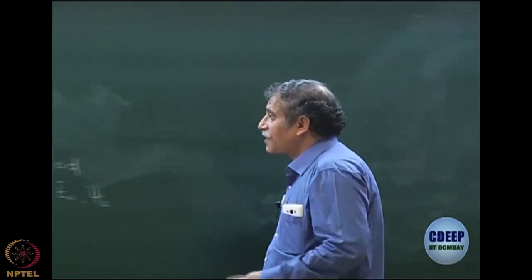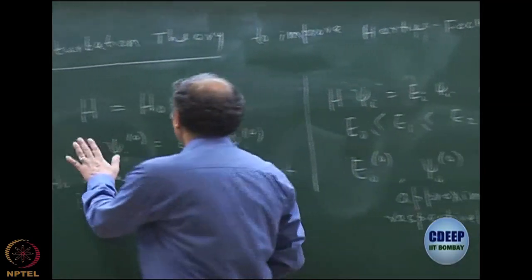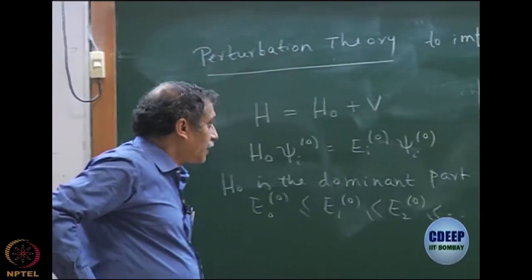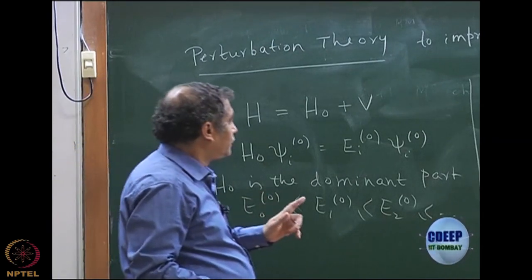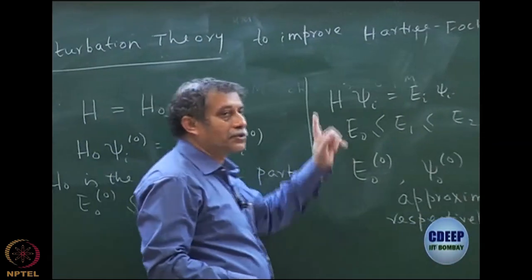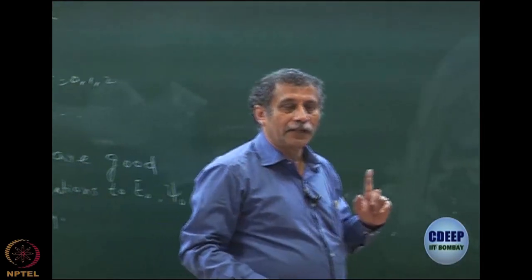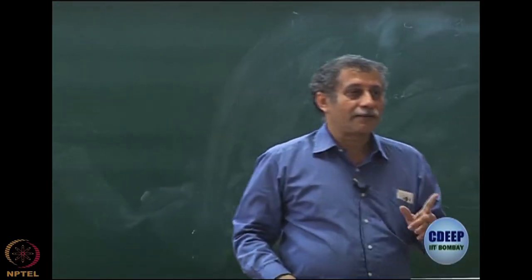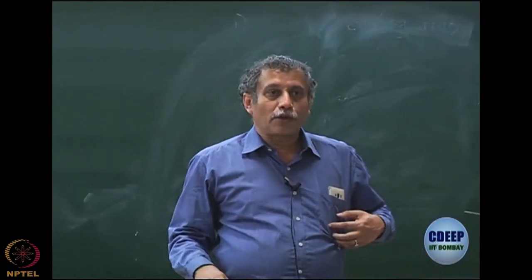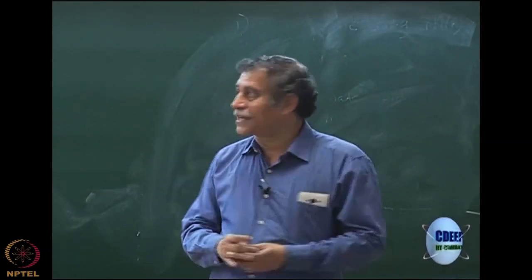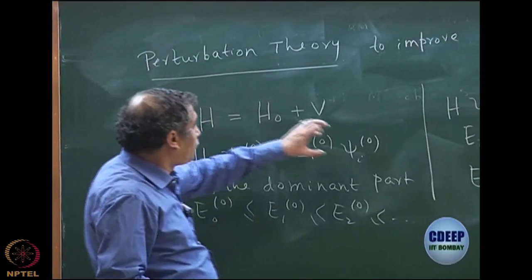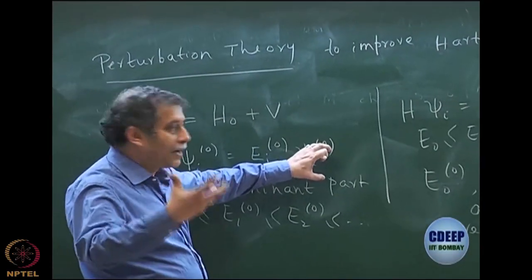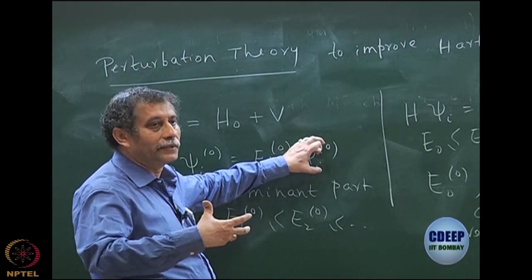Right now, my first task is to split the Hamiltonian as H₀ plus V. When we do that, we notice we already have a wave function that is a pretty good approximation to the exact wave function — that is the Hartree-Fock wave function. We have already done Hartree-Fock, so can I make Hartree-Fock the ground state wave function of some Hamiltonian H₀? Can the Hartree-Fock determinant ψ₀₀ serve this role?